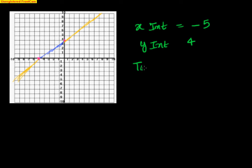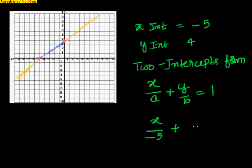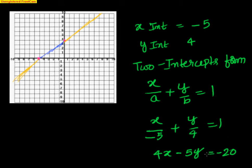I can use the 2-intercept form to create the equation of the line, which says x by a plus y by b equal to 1. If you simplify this, this is nothing but 4x minus 5y equal to minus 20, or 4x minus 5y plus 20 equal to 0. You can do this in more than one method — we have seen it using the 2-intercept form.